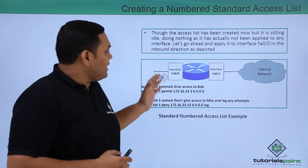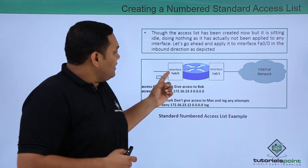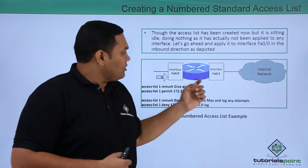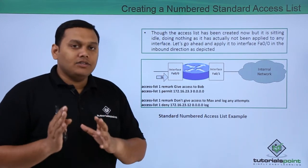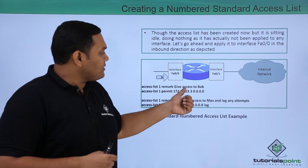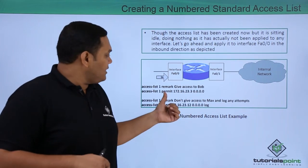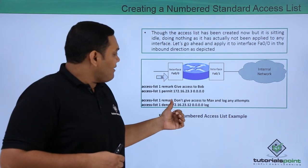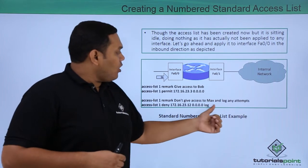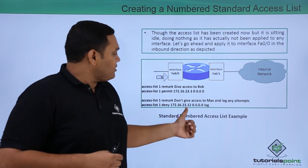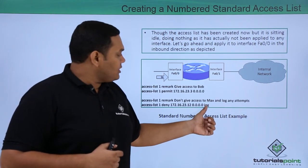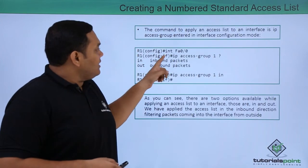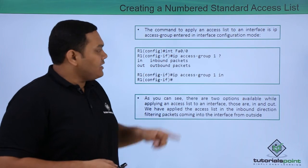In this brief example, the inbound interface FA0/0 and interface 0/1 are connected to the internal network. The access list clearly shows the remark 'give access to Bob,' the permit entry for Bob's IP and wildcard mask, the remark 'don't give access to Max,' and the deny entry with Max's IP, wildcard mask, and the log keyword.